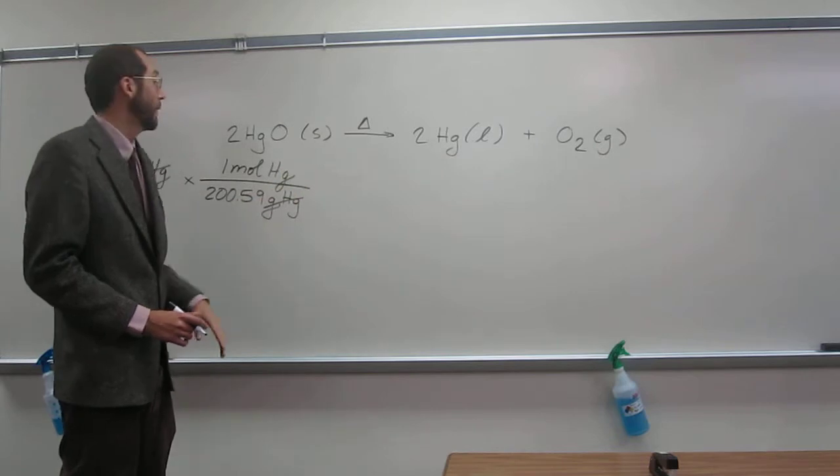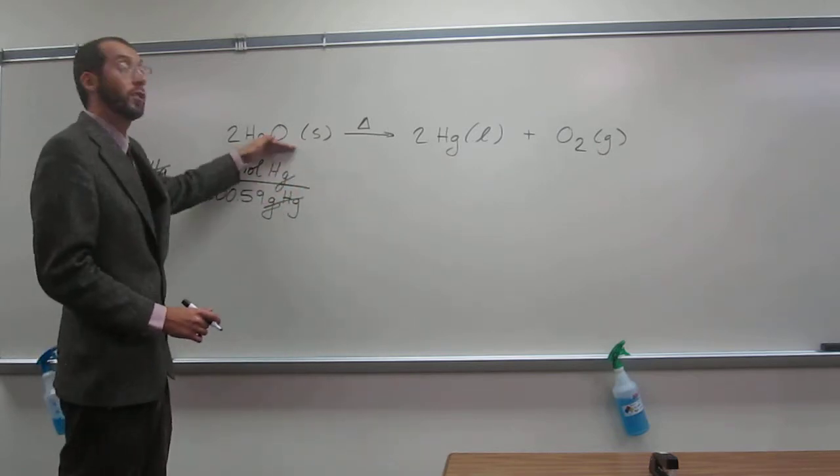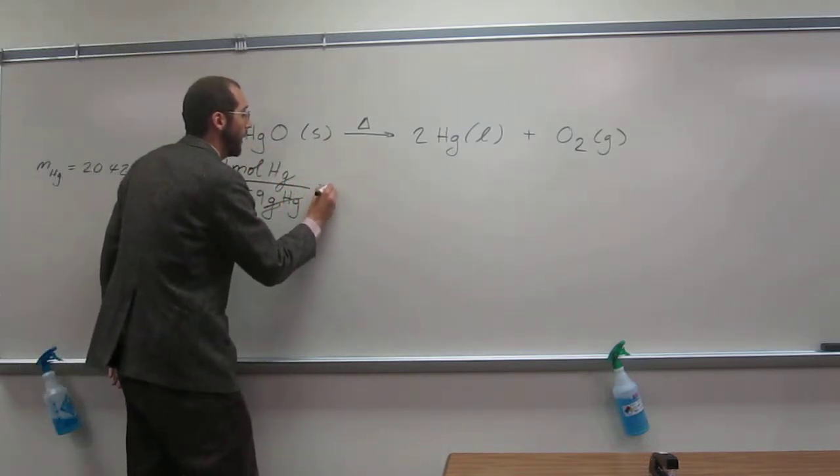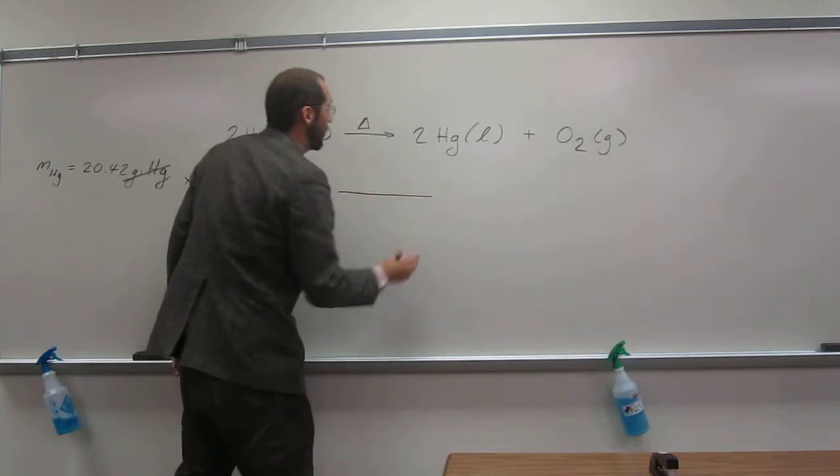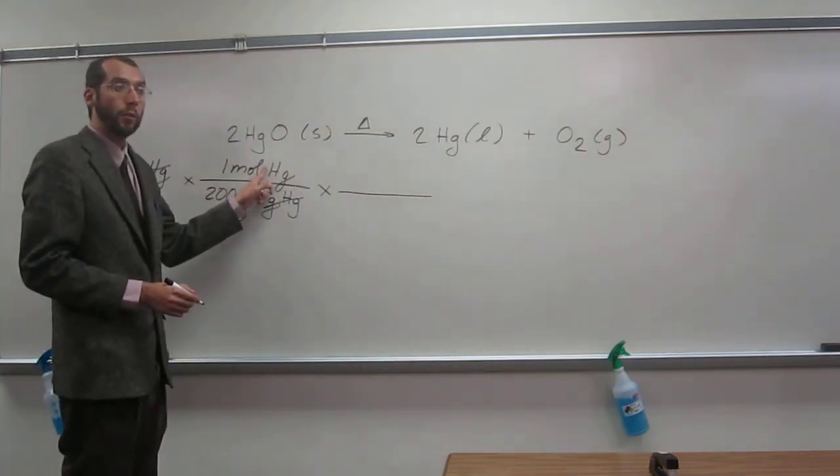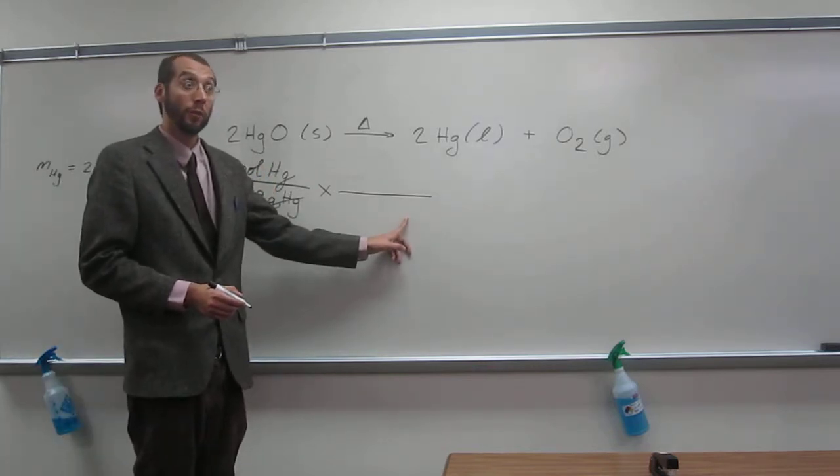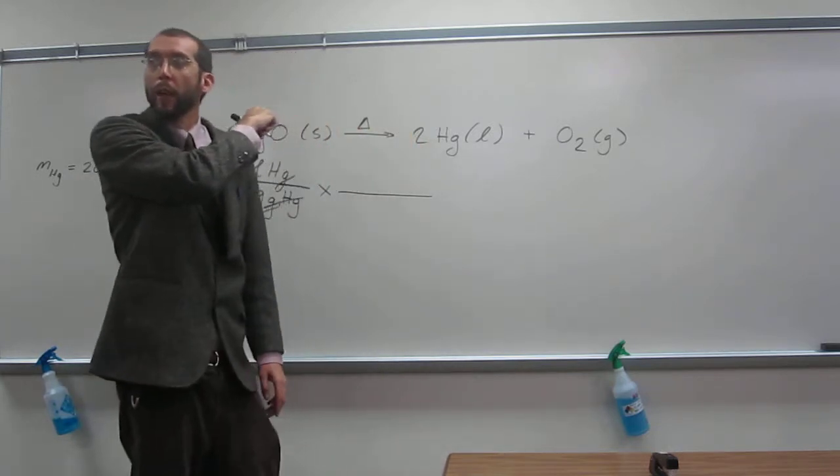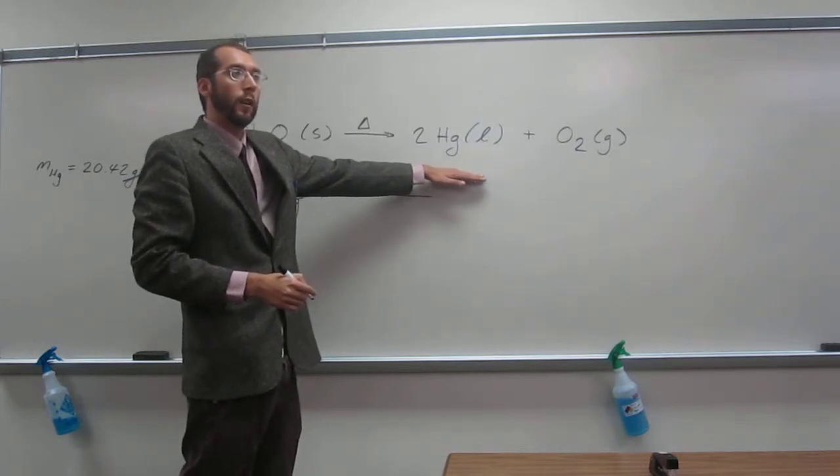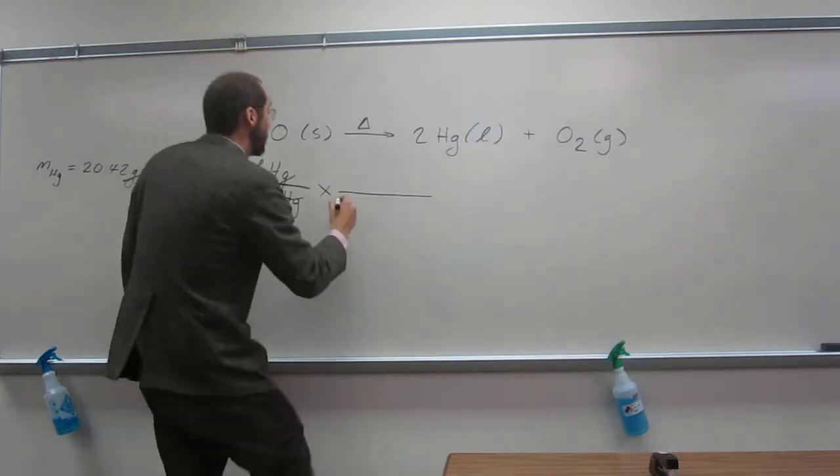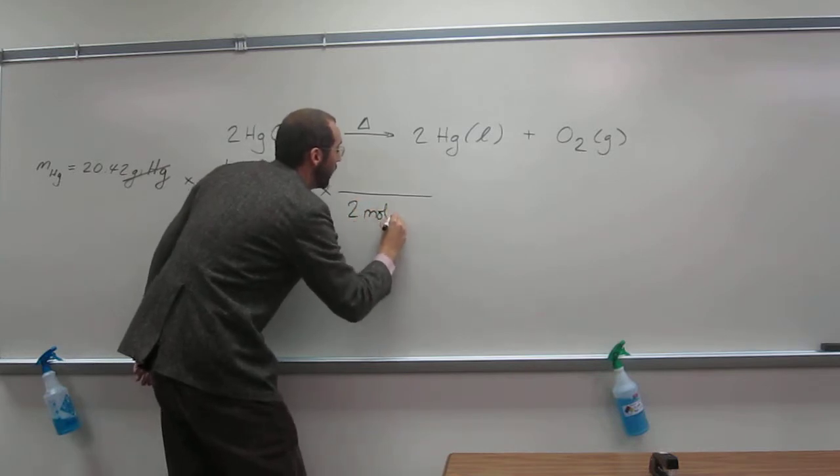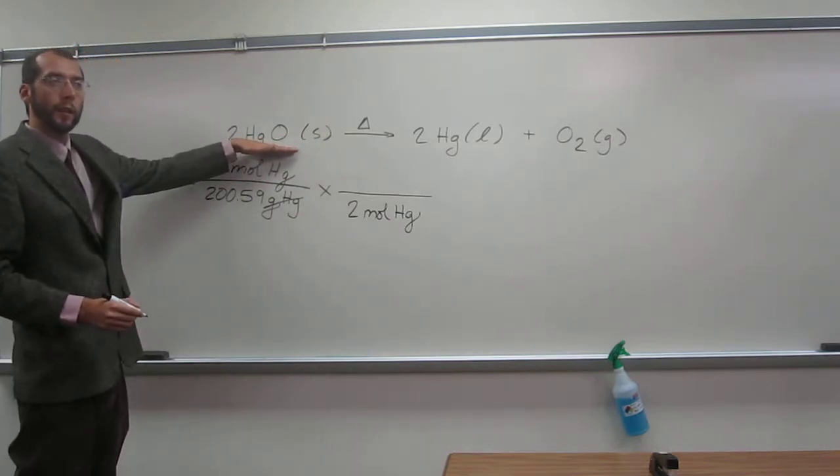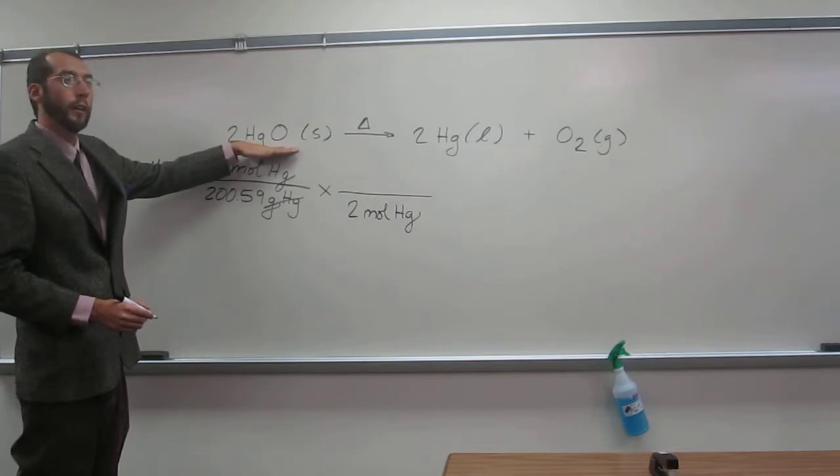I have moles of mercury calculated already. So I want to convert that. I get that conversion factor from the chemical equation like was said earlier. I'm going to multiply that by the conversion factor that I find in the chemical equation. I want to cancel out moles of mercury. So what do I put at the bottom? Moles of mercury, right? And the coefficient tells us what the mole to mole ratio is. The coefficient for mercury here is two.